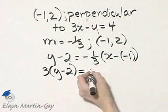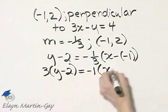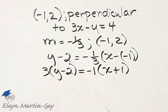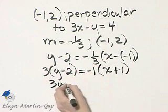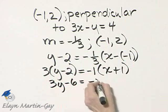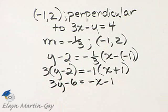The 3's cancel or divide out, and I'll have negative 1 times x plus 1. So that's 3y minus 6 is equal to negative x minus 1.